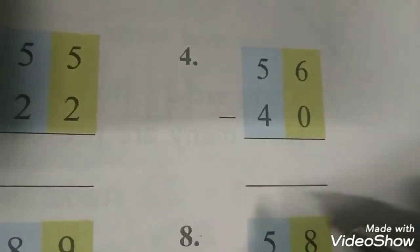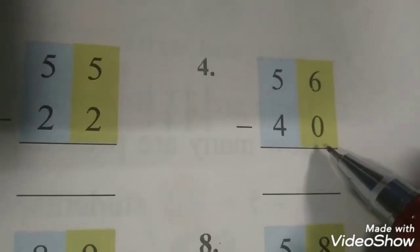Now let us revise 2-digit subtraction also. Again we will follow the same rule. We will subtract ones from ones and tens from tens. 6 minus 0. Sign dekh lijiyega beta, yeh minus ka sign hai. Ab hum plus nahi kar rahe hain, subtract kar rahe hain, minus kar rahe hain. 6 minus 0.